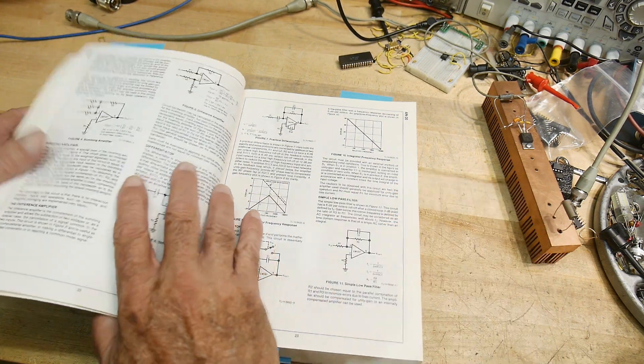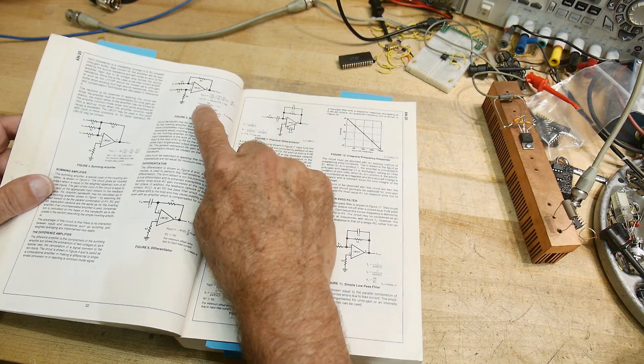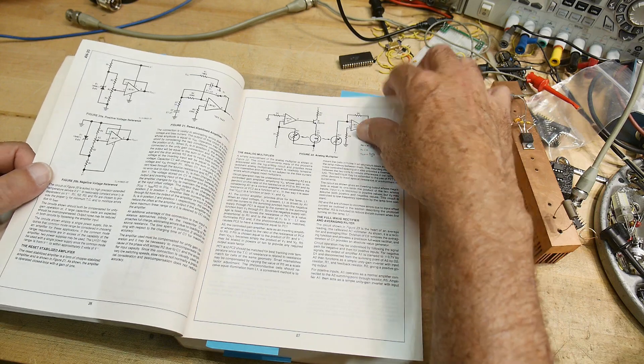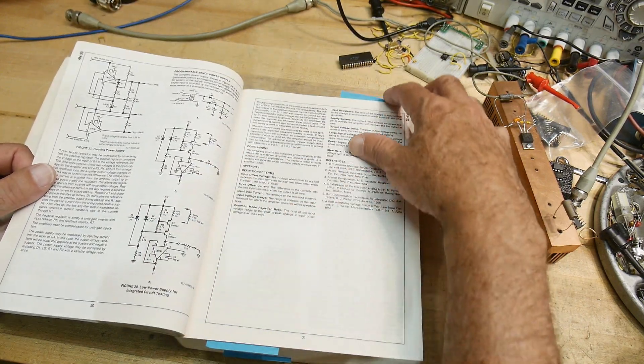But it does tell you all the simple ones. Differentiator. Difference amplifier. Summing amplifier. Doing different things. So anyway, app note 20.